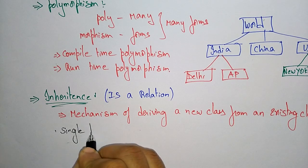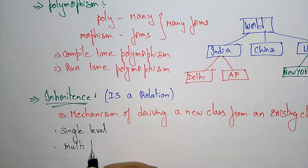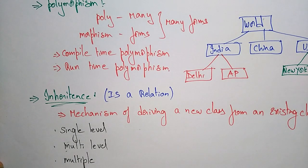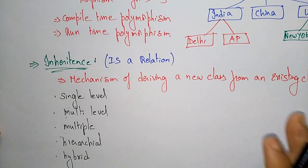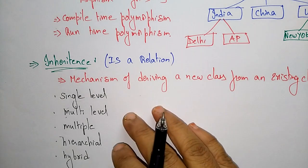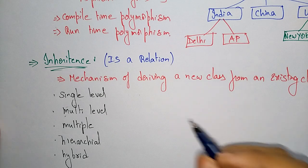The five types of inheritance are: single-level inheritance, multi-level inheritance, multiple inheritance, hierarchical inheritance, and hybrid inheritance. These are the five different types of inheritance used while writing programs. Let us see them one by one.